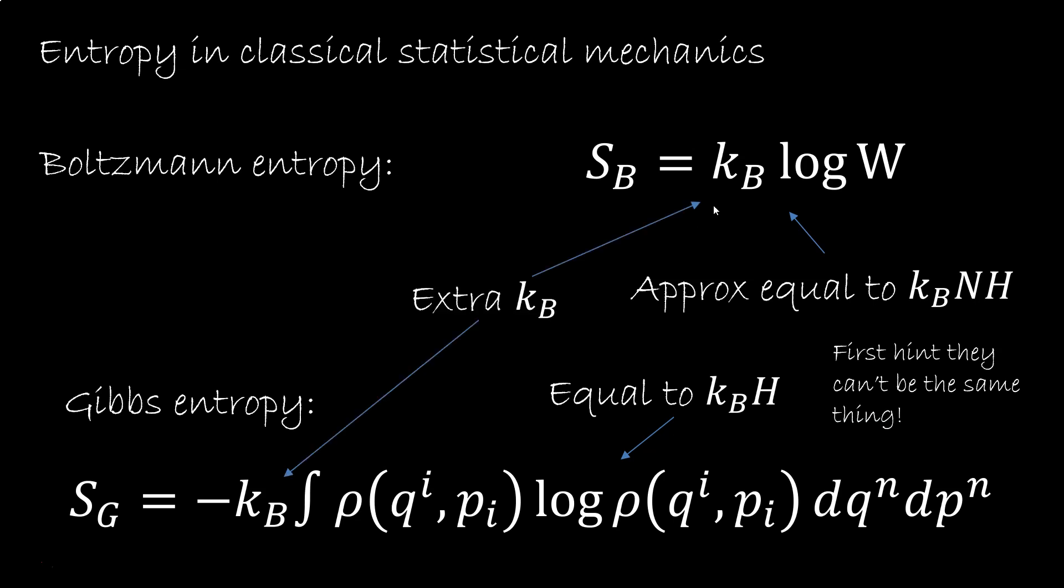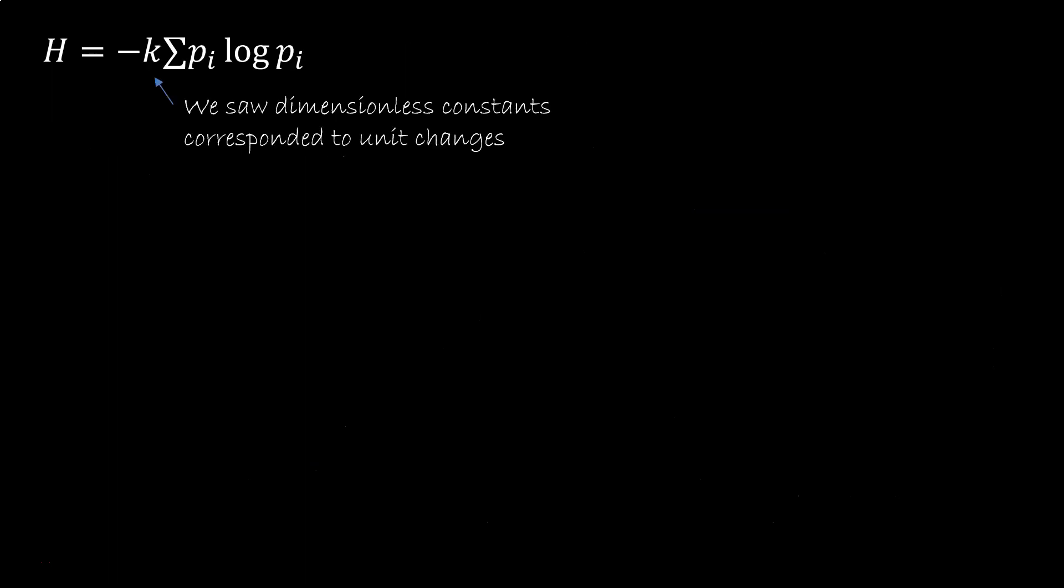But right now we want to focus on the Kb, which seems to be an important difference. What is it? What does it signify? Previously, we saw that a dimensionless constant simply corresponds to a change of units for the variability. But Kb is not dimensionless, so there must be something else going on.